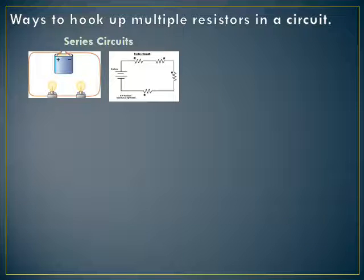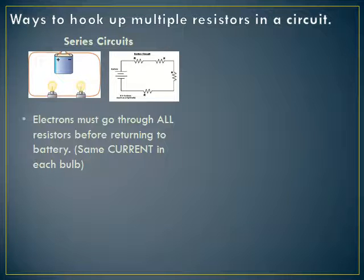What kind of conceptual things can we say about a series circuit compared to a single resistor circuit? The electrons have to go through all the resistors before returning to the battery. This means there's the same current through each bulb — if four electrons every second get pushed out of the battery, then four electrons every second go through the first light bulb, four through the second, and four go back to the battery. Conservation of mass requires this to be true.